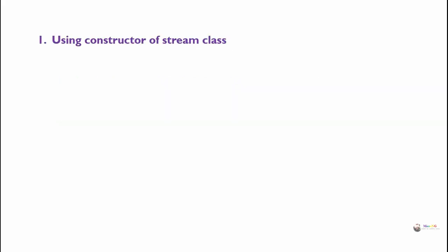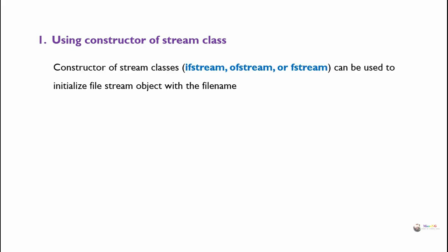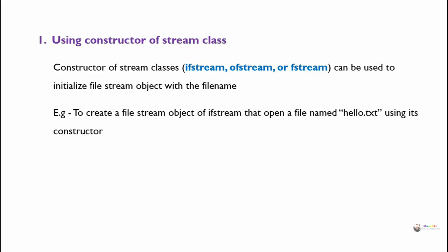The first method is using the constructor of the stream class. The constructor of stream classes — ifstream, ofstream, or fstream — can be used to initialize a file stream object with the file name. For example, to create a file stream object of ifstream that opens a file named hello.txt using its constructor.